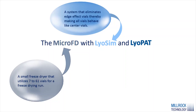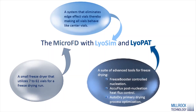That was a quick overview of the MicroFD, the small-scale freeze dryer, and the LiOSIM ring which makes using a small-scale freeze dryer possible. Just as important, if not more so, when developing and optimizing a cycle is the LiOPAT, which is a suite of advanced tools for freeze drying. These include FreezeBooster for controlled nucleation, AccuFlux for post-nucleation heat flux control, and AutoDry for closed-loop primary drying process optimization.